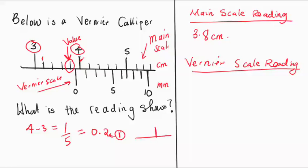You're going to look for a line which is in the same line as the line below the scale, the upper scale. A line on the main scale which is in the same line as that line on the Vernier scale. This is it. 0, 1, 2, 3.